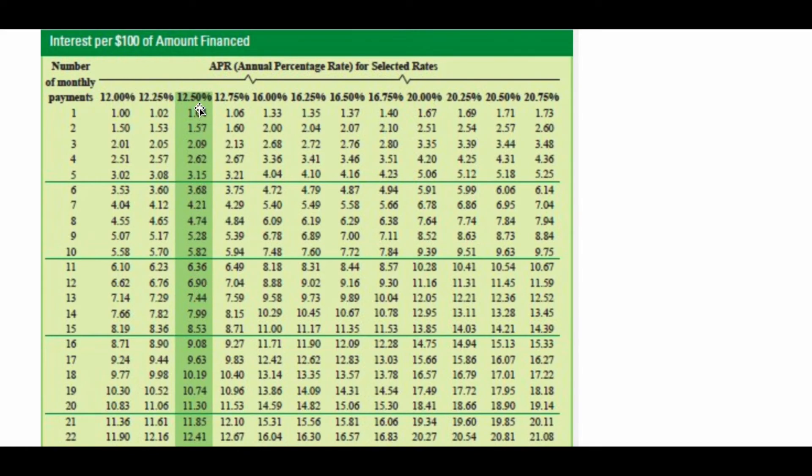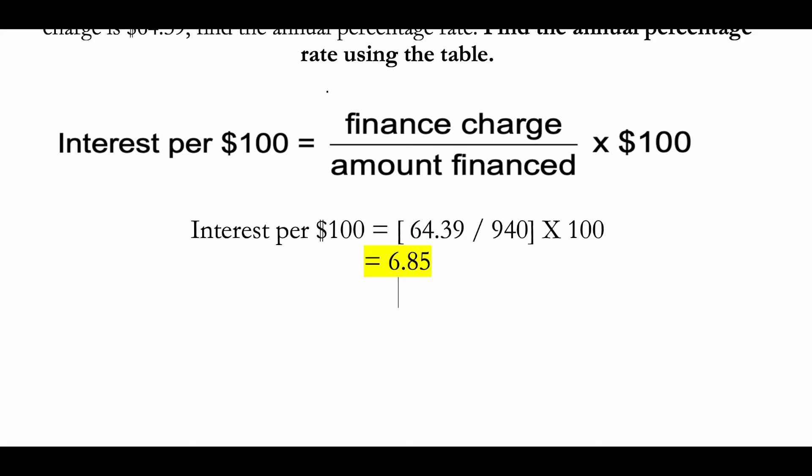Then you're going to slide up to the first row and the 12.50% is your APR. So the answer to this question is 12.85%.